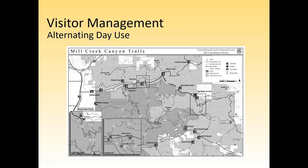The Mill Creek Canyon trail system east of Salt Lake City also uses alternating day use: bikes are allowed on certain trails on odd days only, while other trails are hiker-only at all times. Notably, dogs on leash are permitted only on odd days as well — an interesting model for managing the common visitor management challenge of dogs on trails.